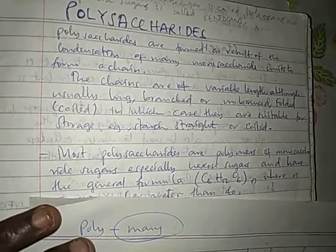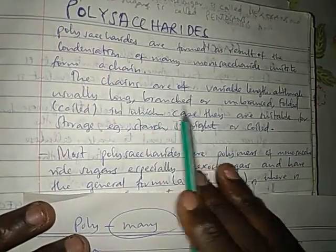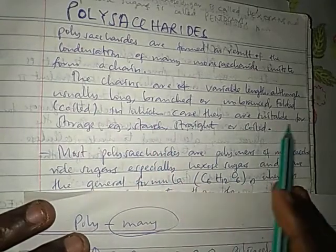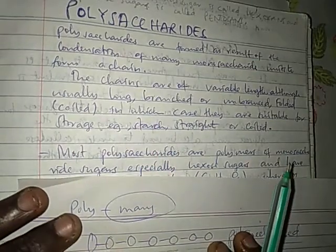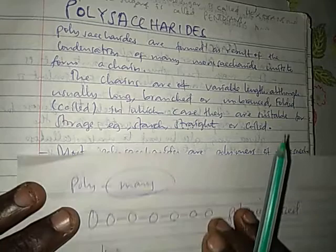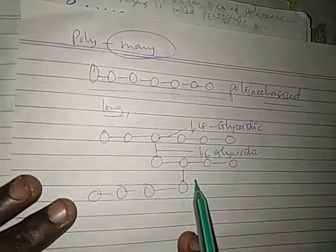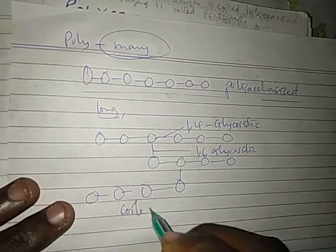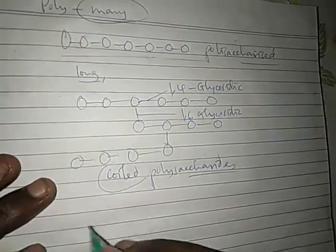So they can be branched or unbranched, folded or coiled, in which case they are suitable for storage. Normally the polysaccharides which are coiled are used for storage, and especially our normal examples here are starch and glycogen.